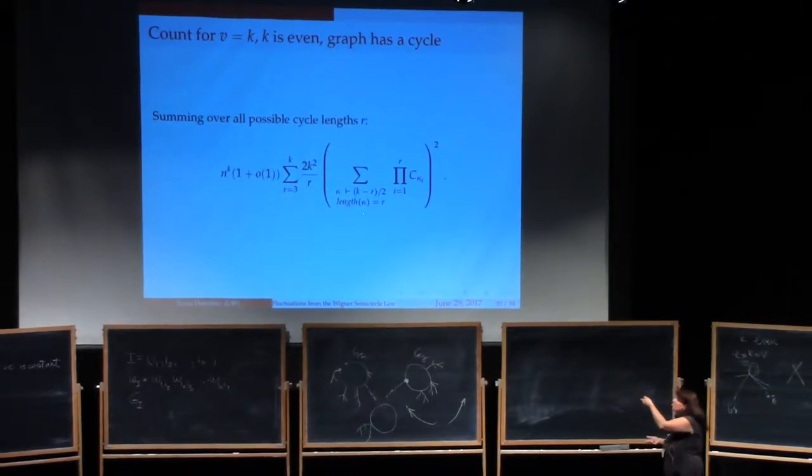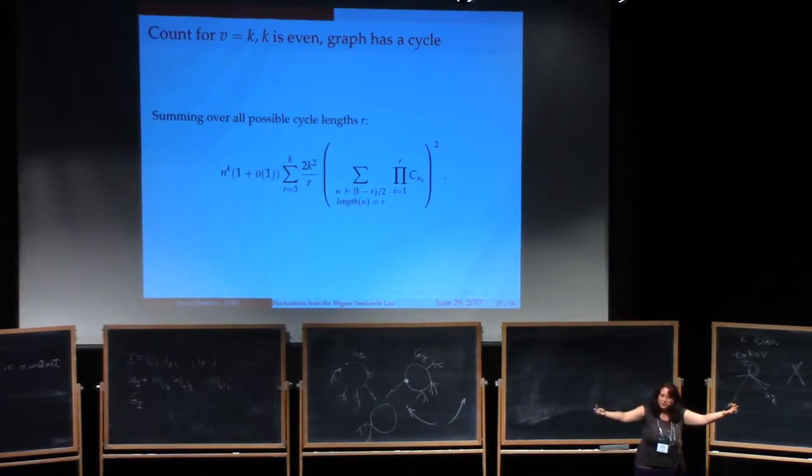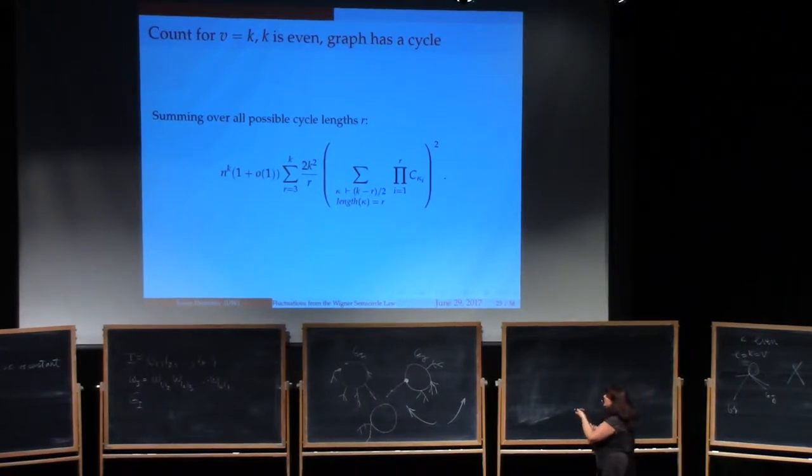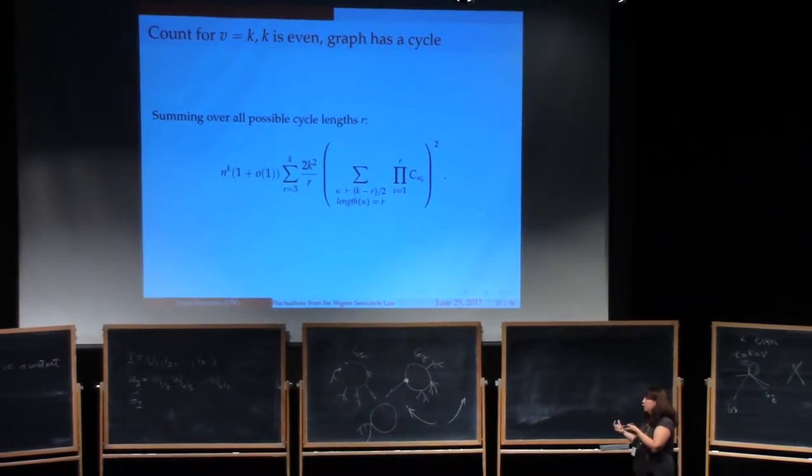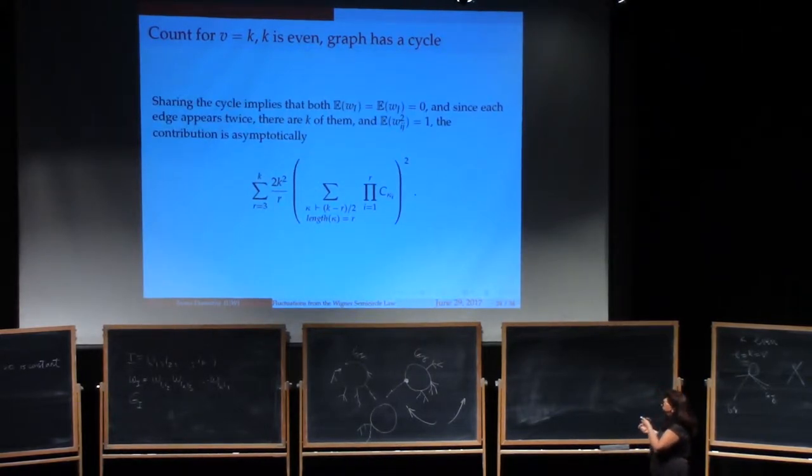So overall, the conclusion is that summing over all possible cycle lengths, you're going to have this 2k squared over r, and then the sum of all possible partitions of k minus r over 2, of the product of c kappa sub 1, c kappa sub 2, c kappa sub r, and you square that because you have to have one partition for wi, one partition for wj. And since they're independently chosen, that means that things multiply. And this is the number of pairs and the number of ways of labeling the vertices in the graph that will give you non-trivial terms, non-negligible terms. So that's the count for when the graph has a cycle.